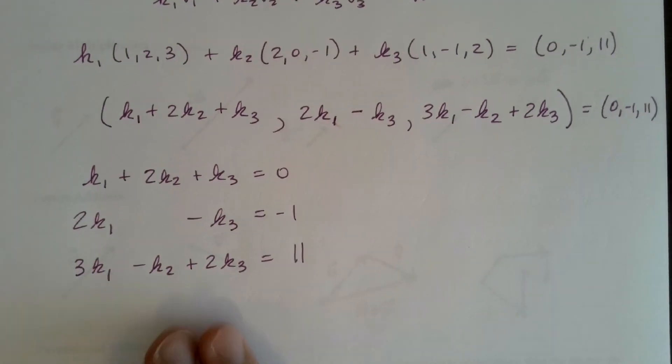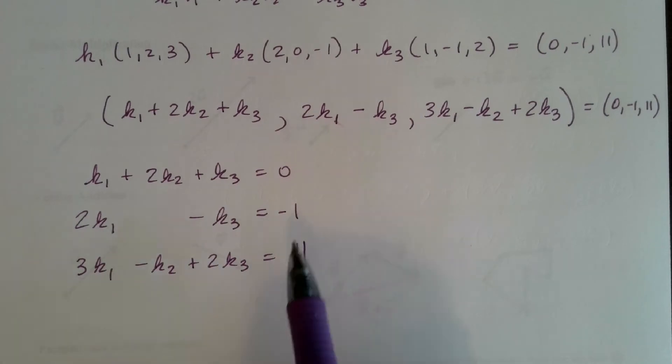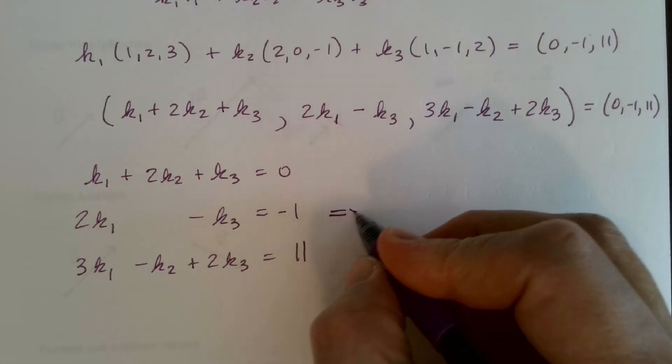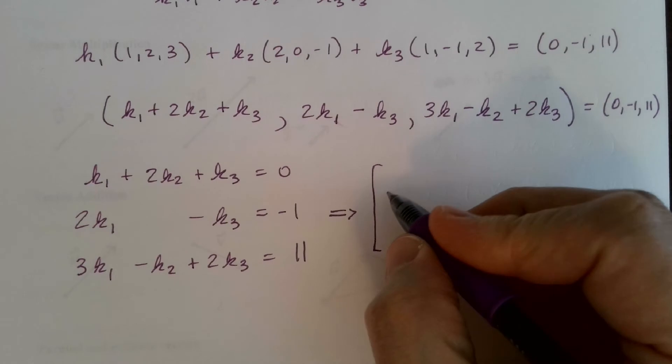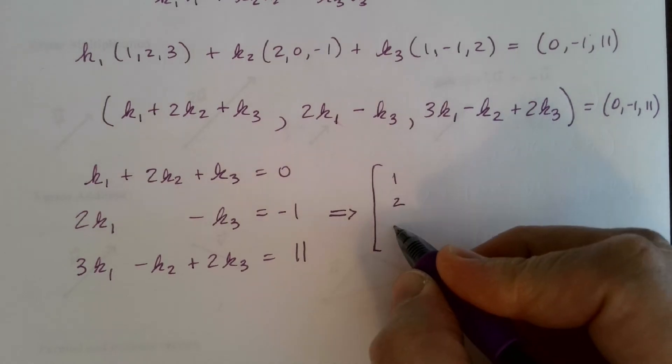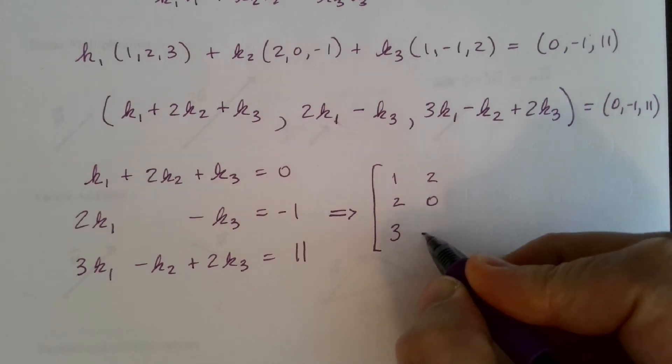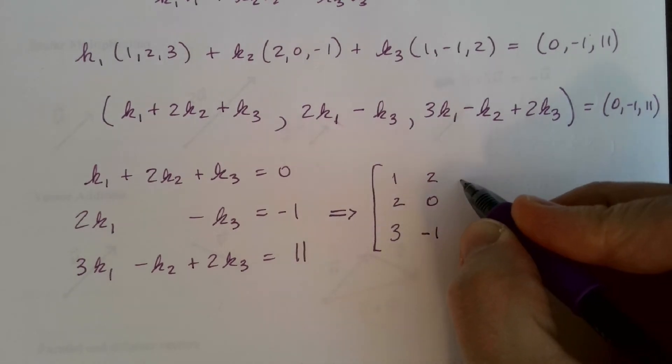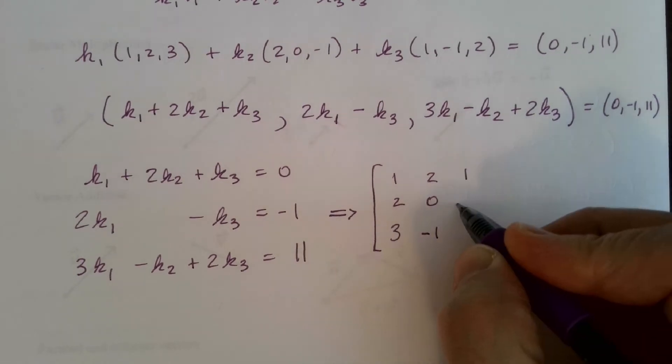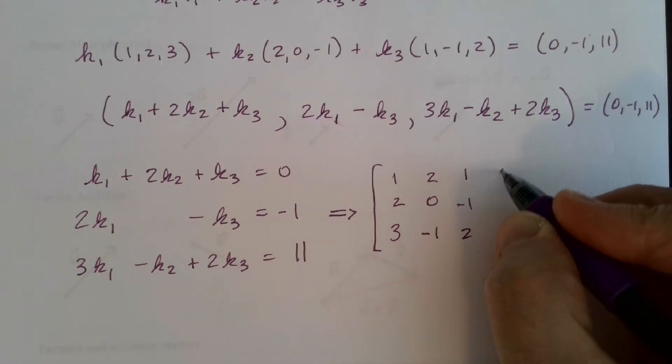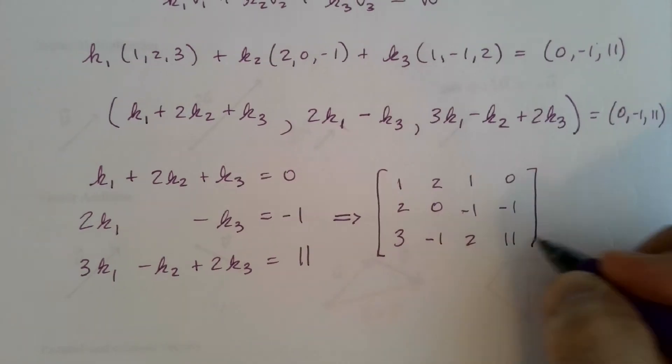All right, equals negative 1. And then the last component has to equal 11. And what do we have here? A system of linear equations. We have three unknowns in three equations. We know how to solve this. I can pop this into its augmented matrix, and we can do Gaussian elimination or Gauss-Jordan elimination. Let's write out the augmented matrix here.